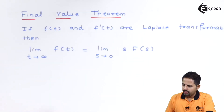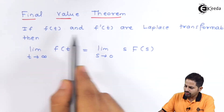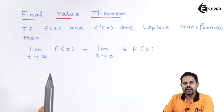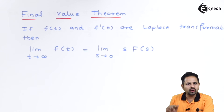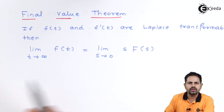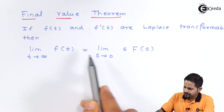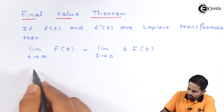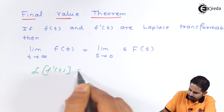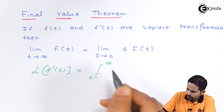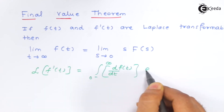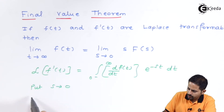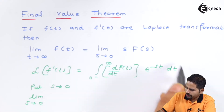Now we will see the Final Value Theorem. If f(t) and f'(t) are Laplace transformable, then the limit as t tends to infinity of f(t) equals the limit as s tends to 0 of s·F(s). In the Initial Value Theorem it was t tending to 0 and s tending to infinity; here it is the reverse. We start from the Laplace transform of f'(t) and put the limit s tending to 0.